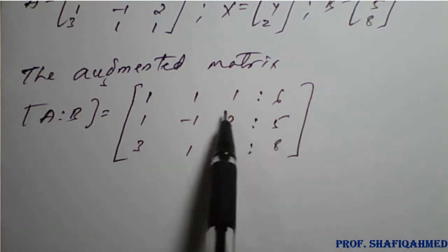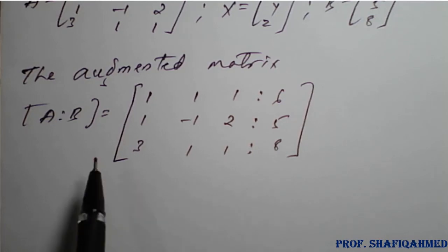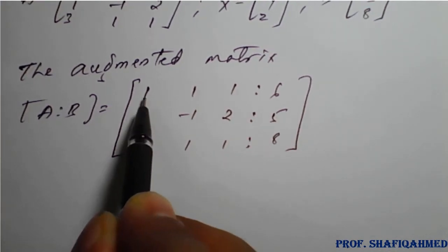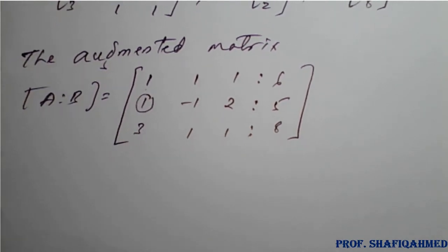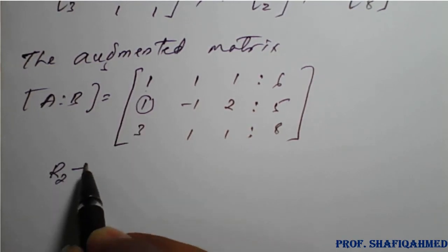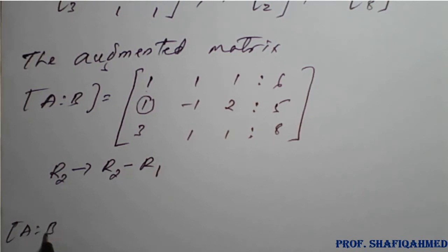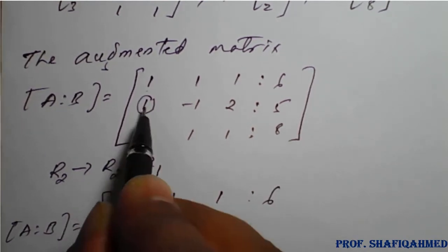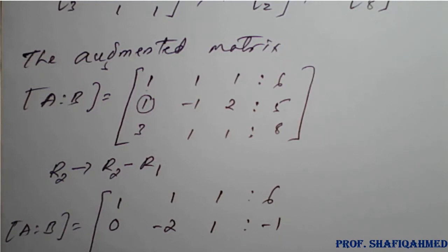We have two cases. The first row's first element is already 1, so we apply row operations to make elements below it zero. For R2, apply R2 minus R1: we get 0, minus 2, 1 | minus 1. For R3, apply R3 minus 3 times R1: 3 minus 3 is 0, 1 minus 3 is minus 2, 1 minus 3 is minus 2, and 8 minus 18 equals minus 10.